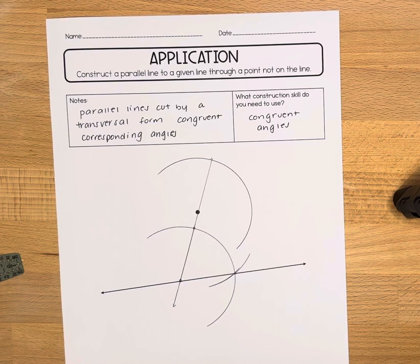The arcs do not need to be the same size, but if you can make them similar in size that will help ensure that you get the intersections that you need.